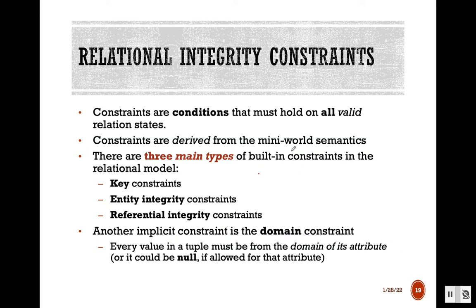In this segment we are going to see relational integrity constraints. Constraints are a very important part of the relational model. They are rules that will be enforced on the data columns of a table — conditions that must hold valid for each relation state. The main purpose of constraints is to limit the type of data that can go into a table, ensuring the accuracy and reliability of the data in the database.